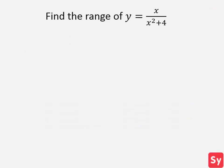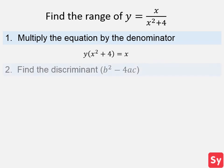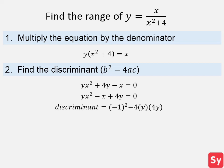Last example: we want to find the range of the function y equals x over x squared plus 4. Since the denominator is a quadratic expression, first we multiply the denominator to both sides of the equation. Next, we find the discriminant. So we distribute y and subtract x from both sides of the equation. We then rewrite the equation to be in standard quadratic form. Next, we plug in the values for a, b, and c and then simplify.